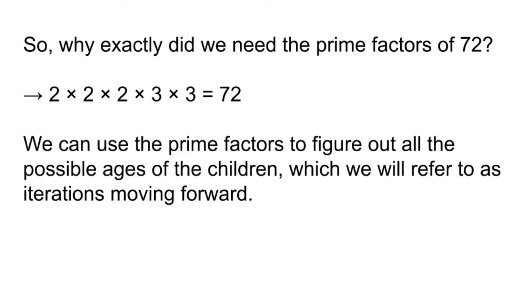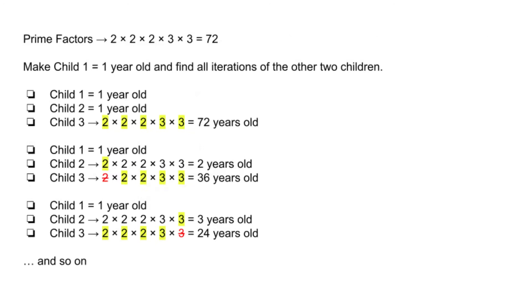We can use the prime factors to figure out all the possible ages of the children, which we will refer to as iterations moving forward. The first thing we will do is to make child 1 equal to a 1-year-old. By leaving child 1 fixed as a 1-year-old, we will figure out all the possible combinations of child 2 and child 3.